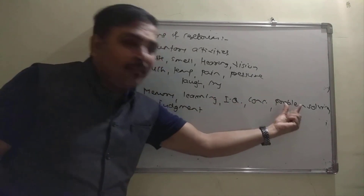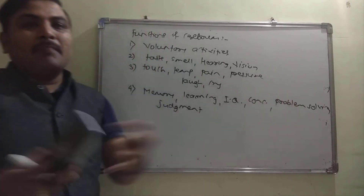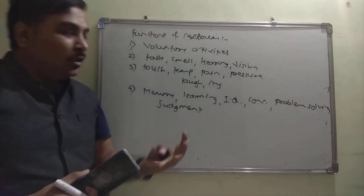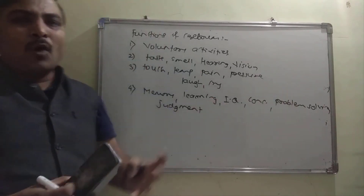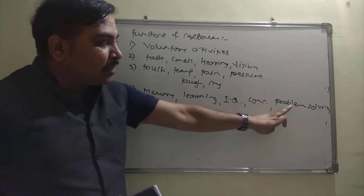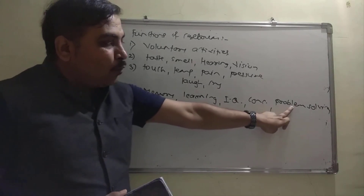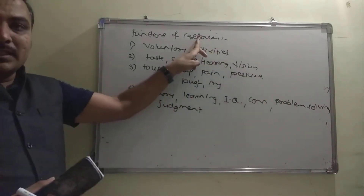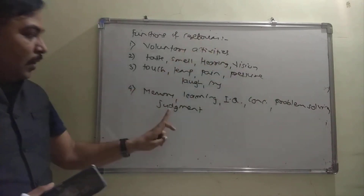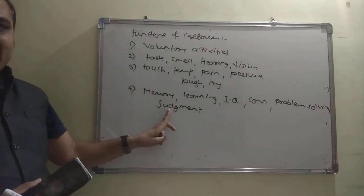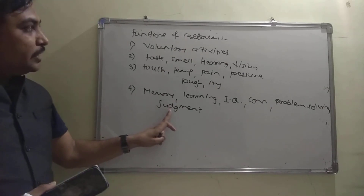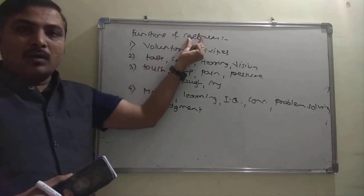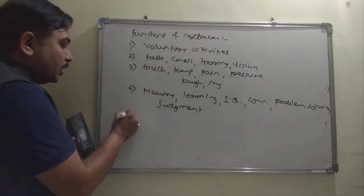Problem-solving abilities — meaning how you handle problems in day-to-day life — and judgment are also under the control of the cerebrum.